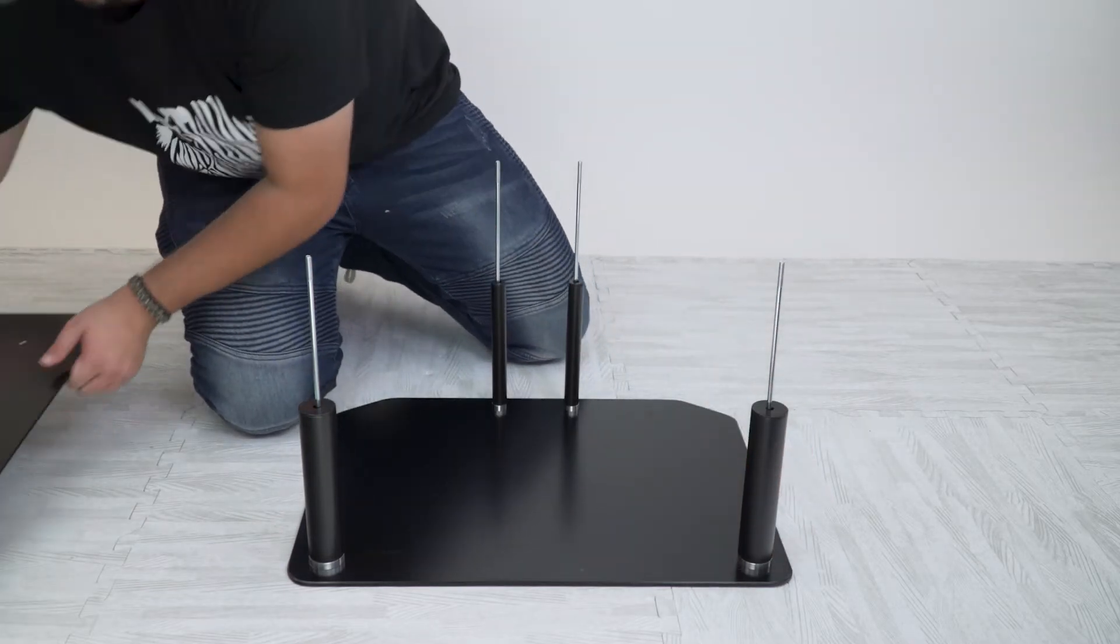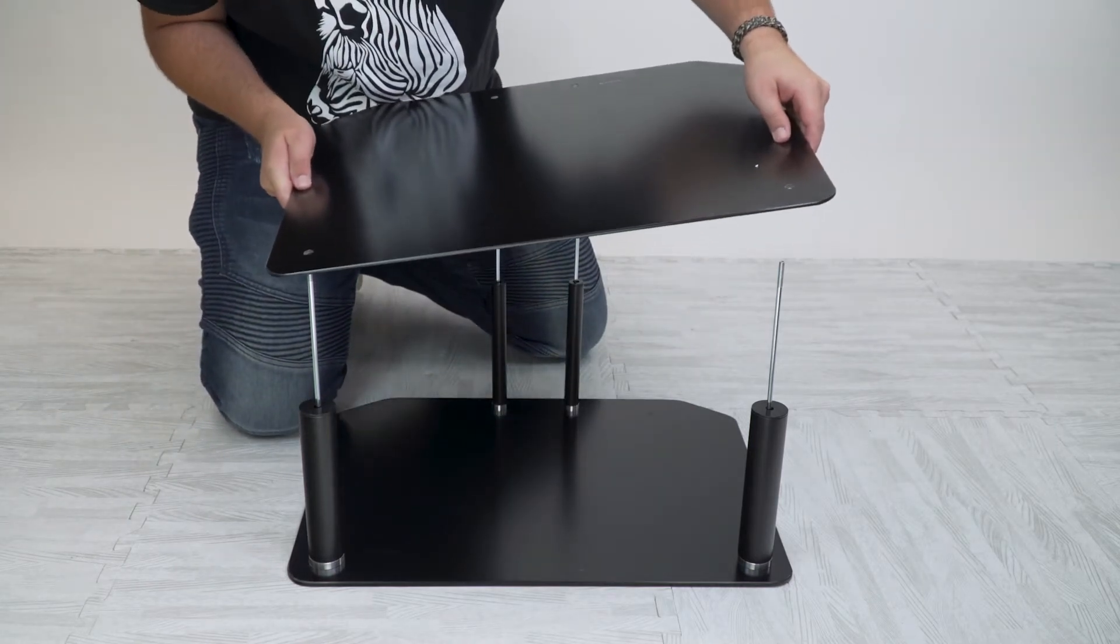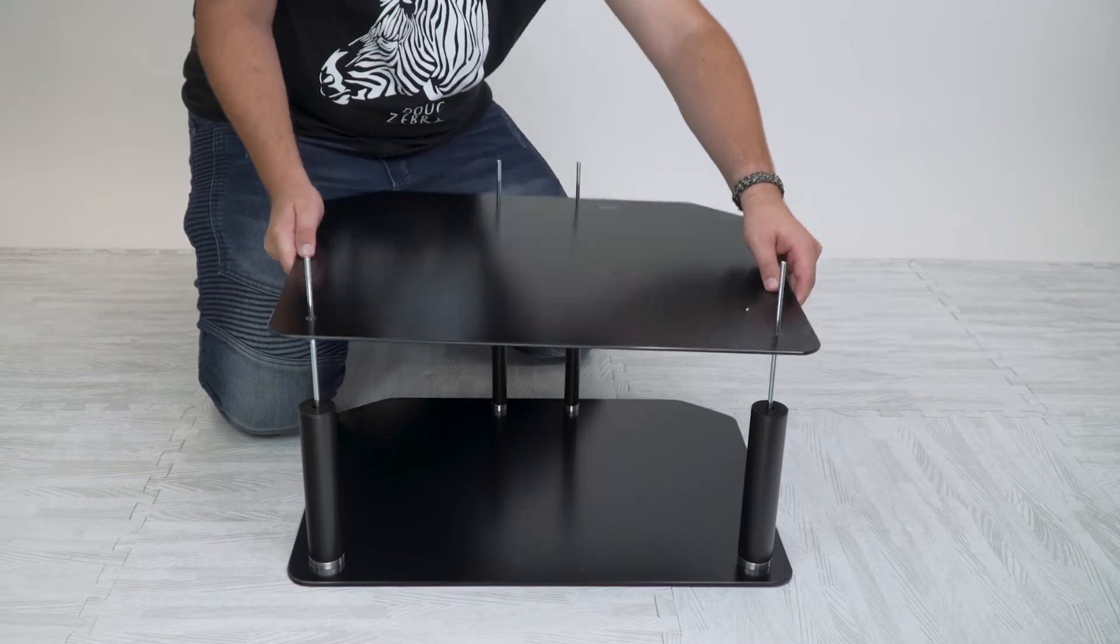Then we're going to grab the shelf, shiny side down, and line up with the holes along the metal rods and place them on top of the legs.